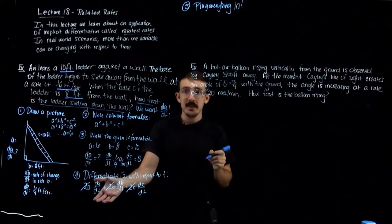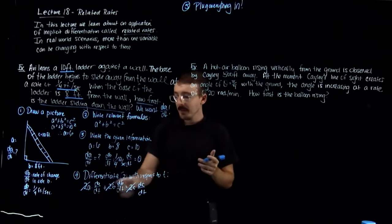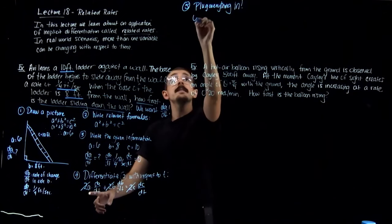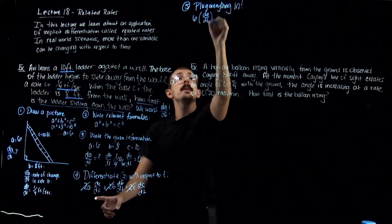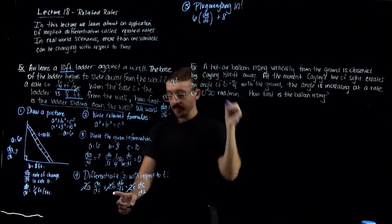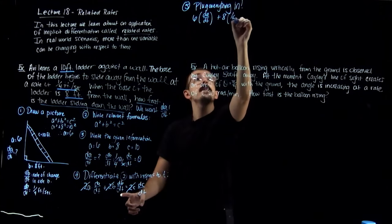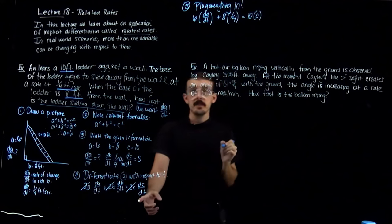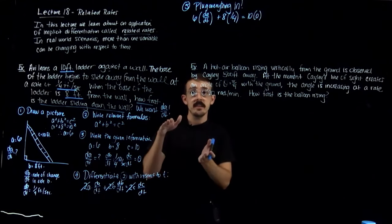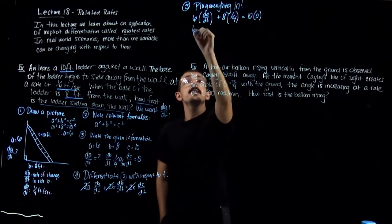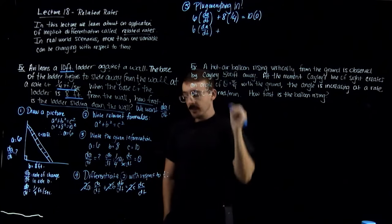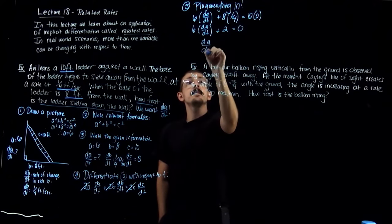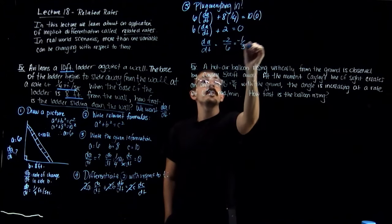Now I'll plug in everything. a = 6 (found from the Pythagorean theorem), da/dt is unknown, b = 8, db/dt = 1/4, c = 10, but dc/dt = 0 so that whole term vanishes. This gives: 6(da/dt) + 2 = 0. Subtracting 2 and dividing by 6, I get da/dt = −2/6 = −1/3 feet per second.